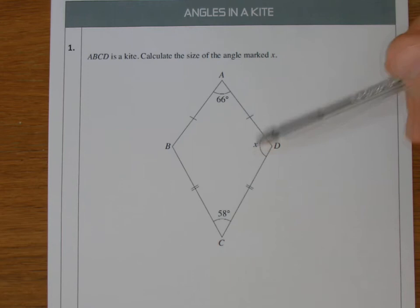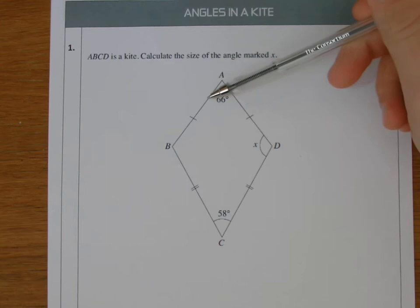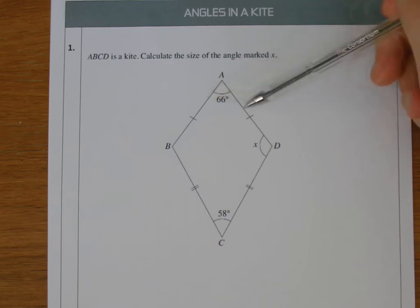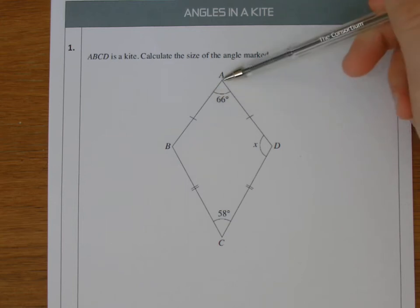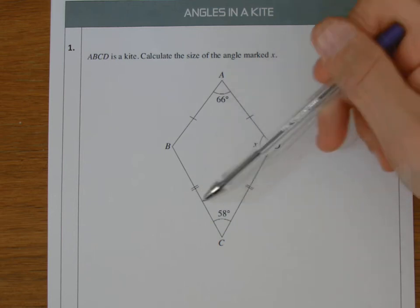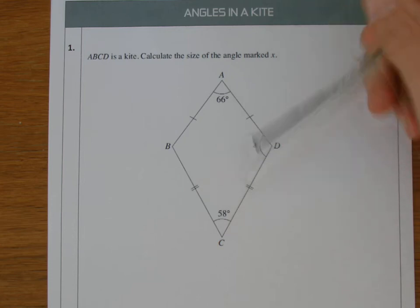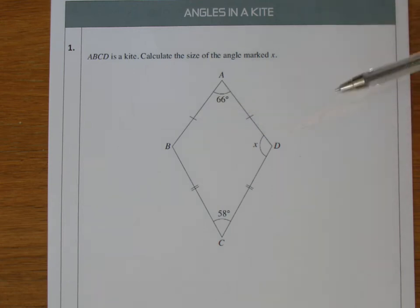Now with a kite, it's a special type of quadrilateral where you have two pairs of adjacent sides that are equal in length. What we mean by adjacent is next to - this pair of sides next to each other meet at A, and this pair of sides are adjacent to each other because they meet at C. They're equal in length. You can see two dashes there and one dash there to show that this pair are also equal in length.